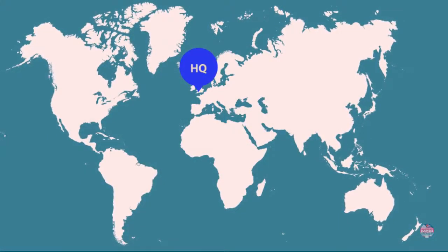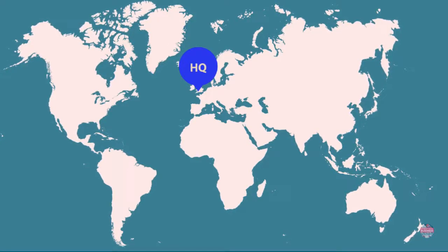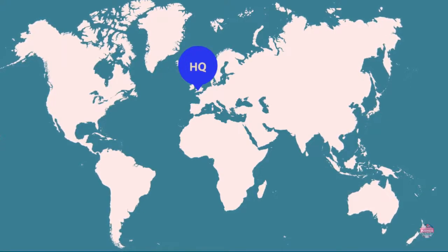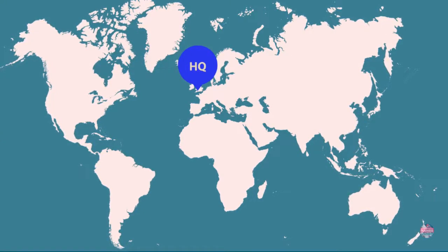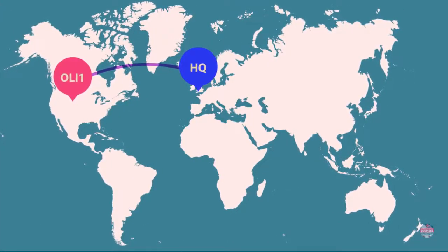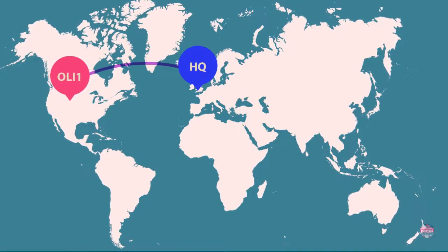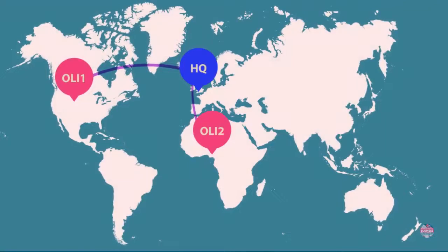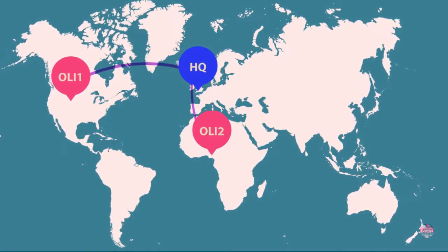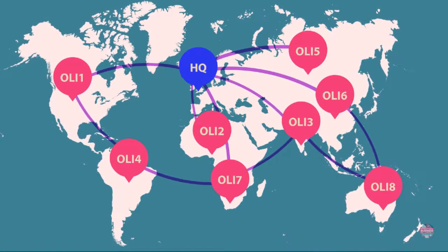Let us explore the example of a company that is located in the United Kingdom and is considering its first foreign direct investment. We mark this company as headquarters on our map. Our company made its first foreign direct investment to the United States, so we mark it as OLI 1 on our map. The second investment took place in Nigeria, so we mark it as OLI 2 on our map. And the rest will follow with time.